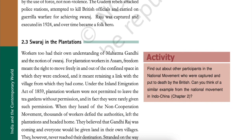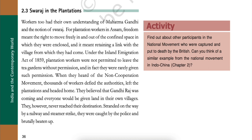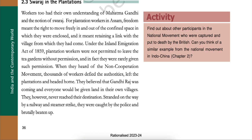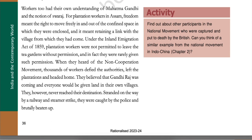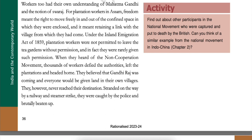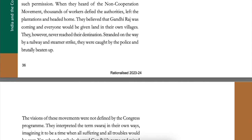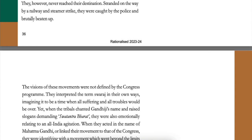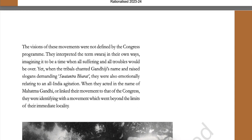Swaraj in the Plantations. Plantation workers in Assam also had their own understanding of Mahatma Gandhi. For them, freedom meant the right to move freely in and out of the confined space in which they were enclosed, and it meant retaining a link with the village from which they had come. Under the Inland Emigration Act of 1859, plantation workers were not permitted to leave the tea gardens without permission, and in fact they were rarely given such permission. When they heard of the non-cooperation movement, thousands of workers defied the authorities, left the plantation and headed home. They believed that Gandhi Raj was coming and everyone would be given land in their own villages. However, they never reached their destinations — stranded on the way by railway and steamer strikes, they were caught by the police and brutally beaten up. The visions of these movements were not defined by the Congress program; they interpreted the term Swaraj in their own ways, imagining it to be a time when all suffering and all troubles would be over.